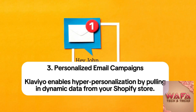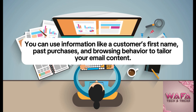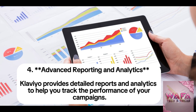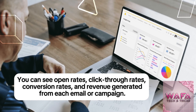Feature 3: Personalized email campaigns. Klaviyo enables hyper-personalization by pulling dynamic data from your Shopify store. You can use information like a customer's first name, past purchases, and browsing behavior to tailor your email content. This level of personalization makes emails feel more relevant and engaging, leading to higher open and click-through rates. Feature 4: Advanced reporting and analytics. Klaviyo provides detailed reports and analytics to help you track the performance of your campaigns. You can see open rates, click-through rates, conversion rates, and revenue generated from each email or campaign.